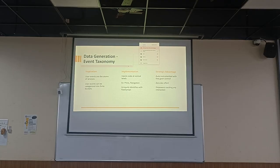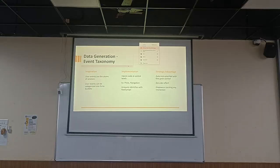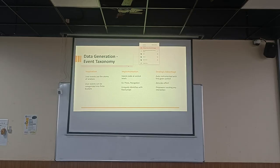To circumvent this problem, we came up with a framework called event taxonomy. The event taxonomy is based on the idea that all user events are the atoms of analysis — any analysis you need to do requires triggering certain events. Those user events can be categorized into finite buckets. You don't need infinite events in the application. There are only finite buckets such as press, navigation, or any IO call. This is not an exclusive list, but these buckets are finite — around 10 to 12 buckets.